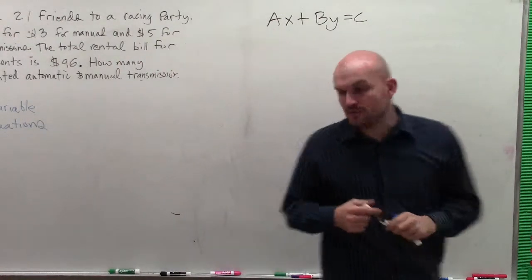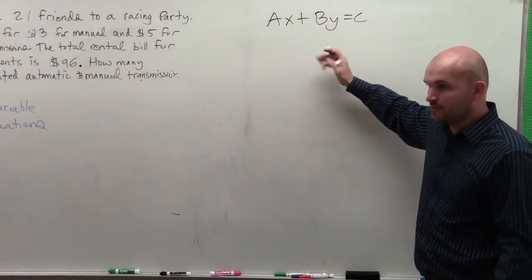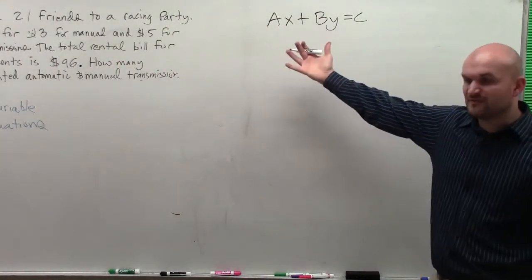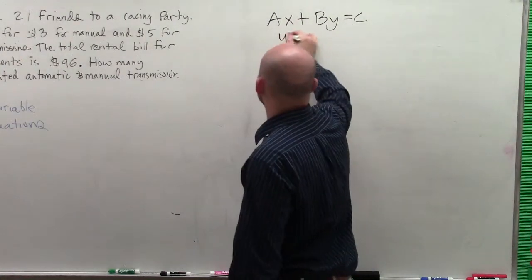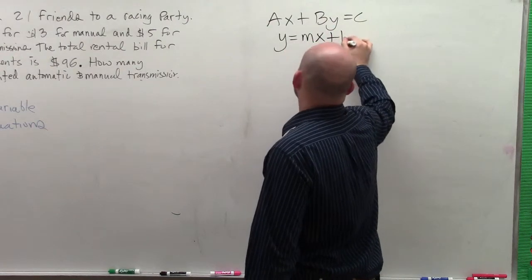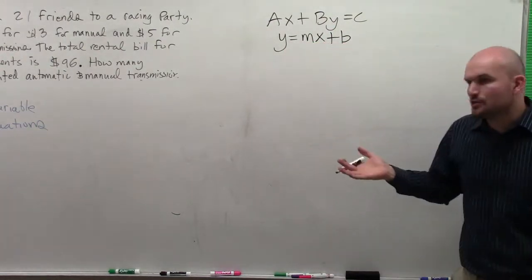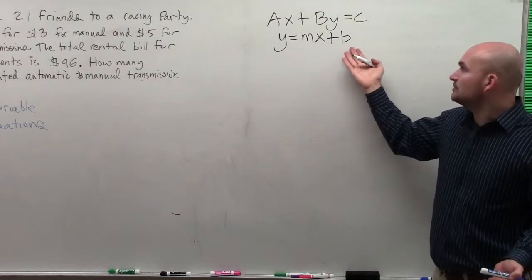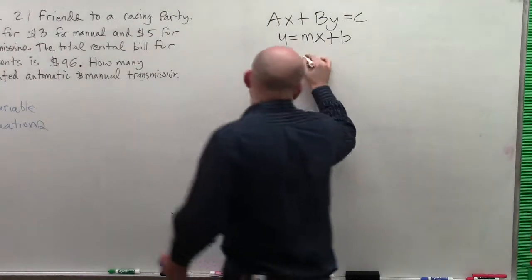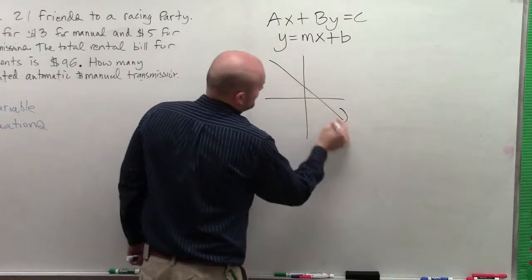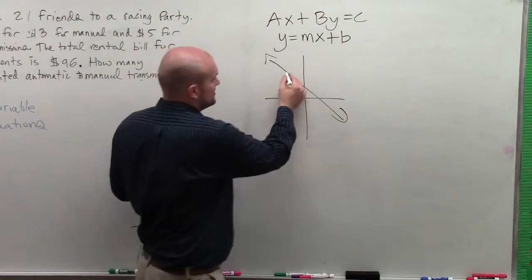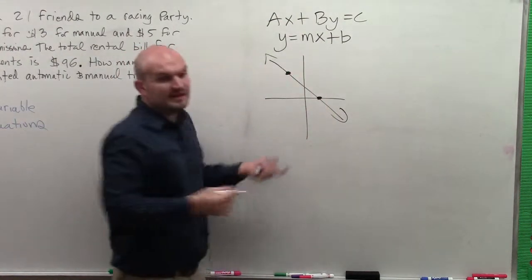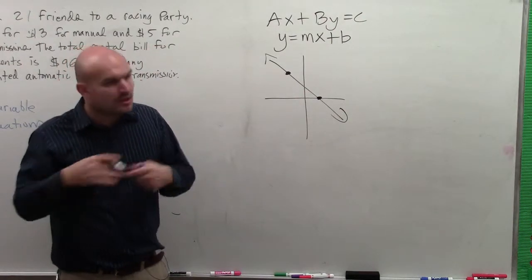The important things that I wanted to go over with you guys is when we had something in standard form, we looked at a couple different ways to graph this. You could use intercept method, or we could rewrite it into slope-intercept form. And we liked slope-intercept form because then we could just graph the y-intercept and the slope. And what was important about this was when we graphed the line using any method, we created a line where it's just between two points. And that's all you needed for a line.